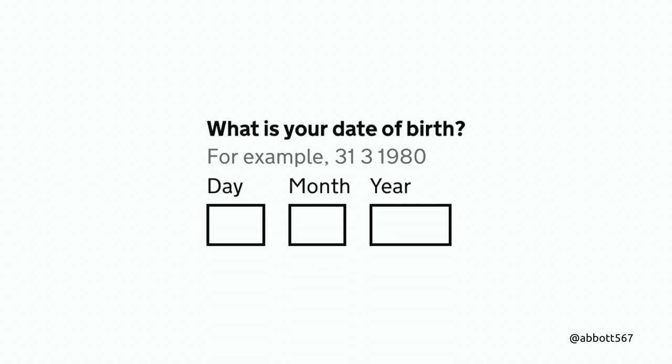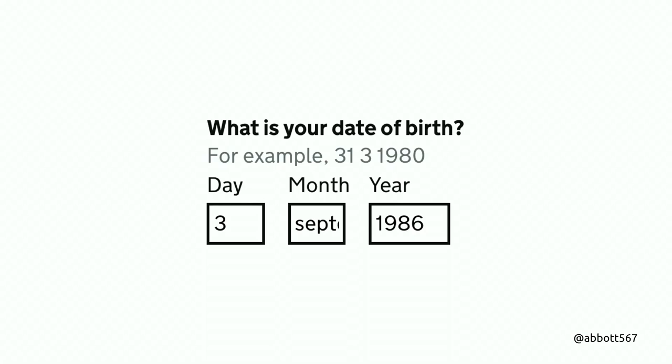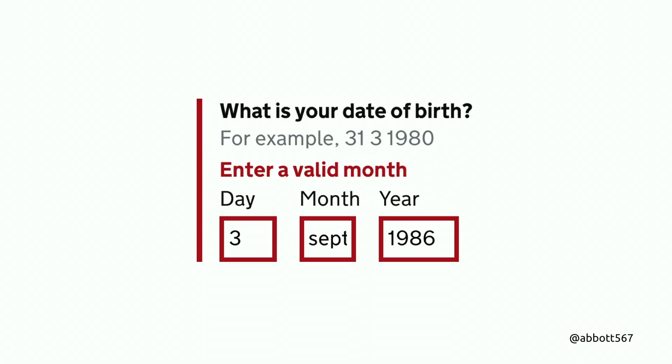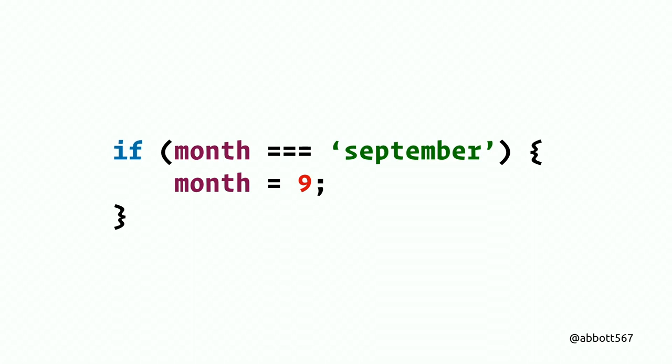This is a real example from DWP — replicated for the talk due to GDPR. The standard date pattern for GOV.UK services asks for dates in three boxes. In research, people were typing 'September' in the month box and getting a validation error saying 'enter a valid month.' September is a valid month — it's just not in the format we expected. So we built a fix on the back end: if the month field equals 'September', convert it to nine. We just let them put in September and resolved it on the back end.